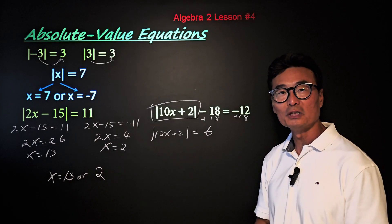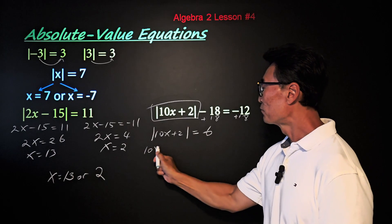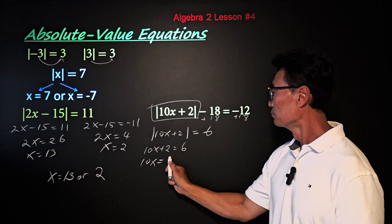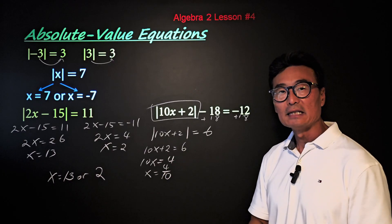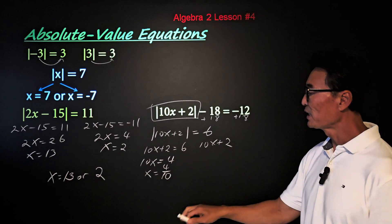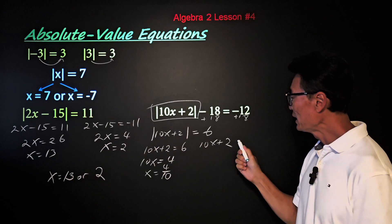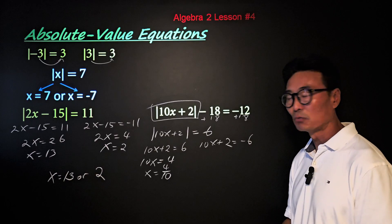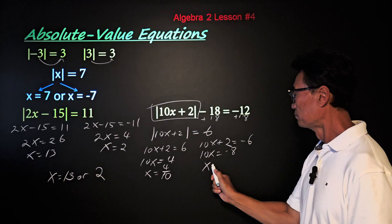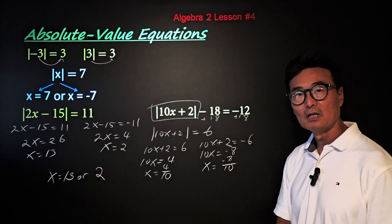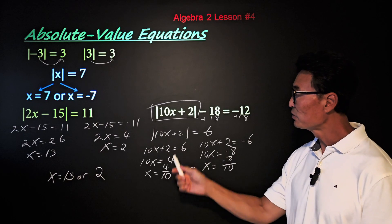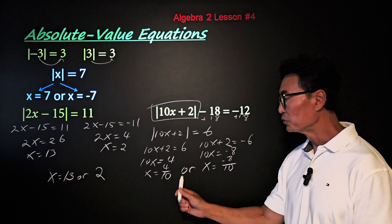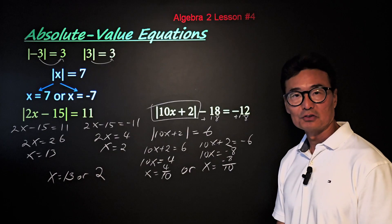Just like before, we separate this absolute value equation into two equations. The first one is the positive outcome, and the second one — notice — we leave what's in the absolute value sign alone and change only the right side into negative 6. The final answer to this equation is x equals 4 over 10 or negative 8 over 10. Of course, you can reduce these fractions or change them into decimal answers as well.